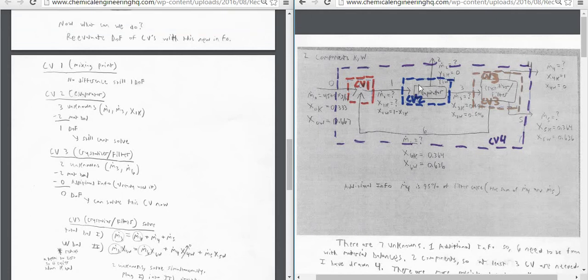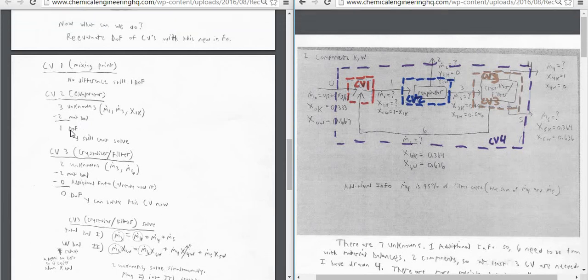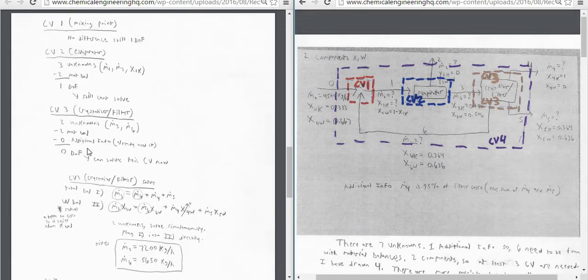Now we have one less unknown because we've solved for M2, but we still don't know M1, X1K, or M3. And we still only have two material balances, so that's one degree of freedom. We can't solve that either.